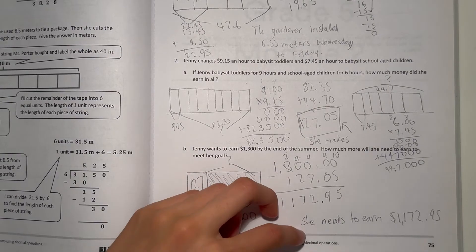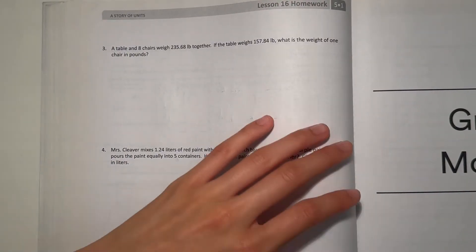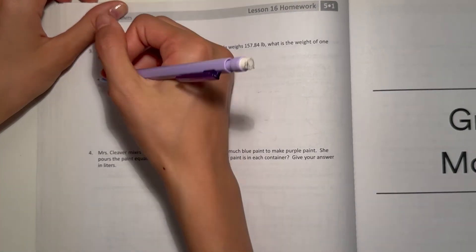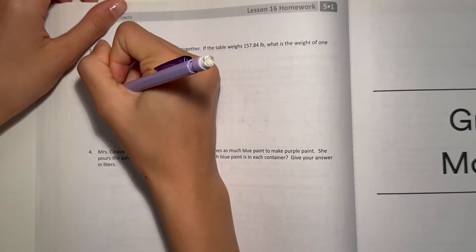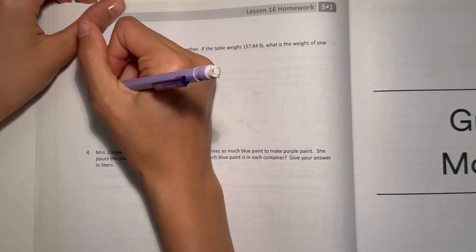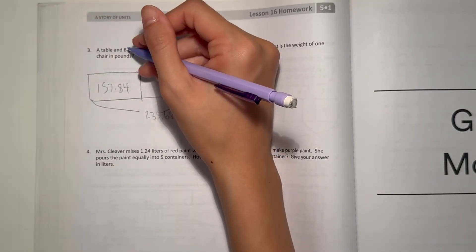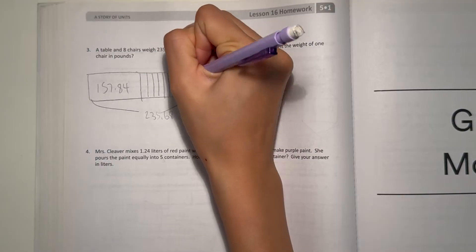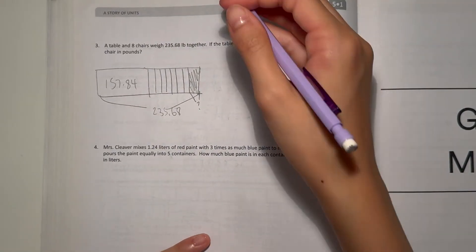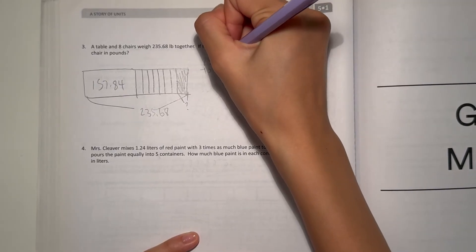Number three: a table and 8 chairs weigh 235.68 pounds together. The table weighs 157.84 pounds. What's the weight of each chair in pounds? So we know altogether they weigh 235.68 pounds. The table weighs 157.84. So first let's find out how much 8 chairs weigh: 235.68 minus 157.84.